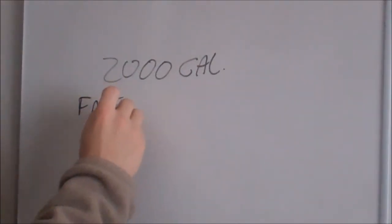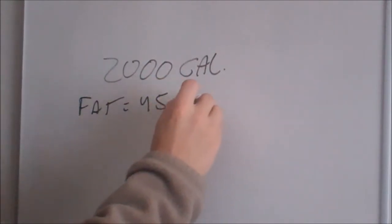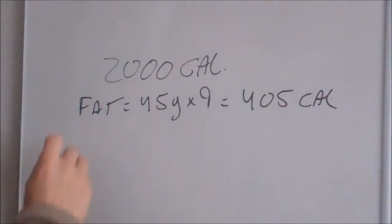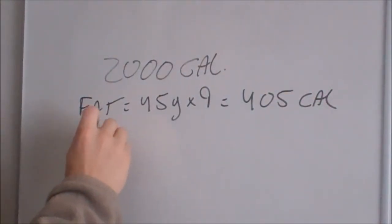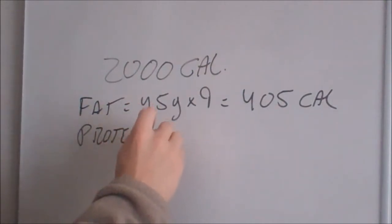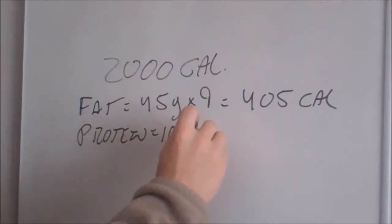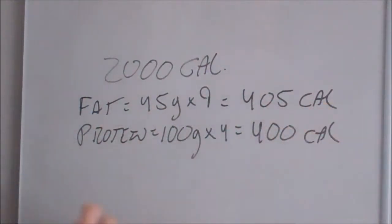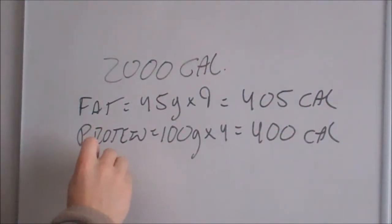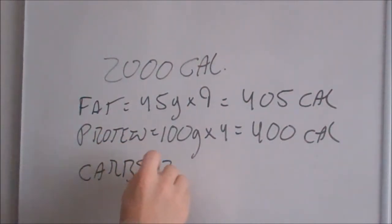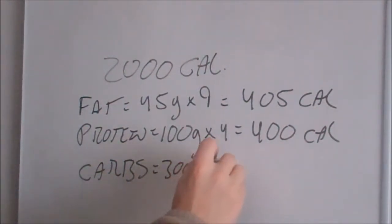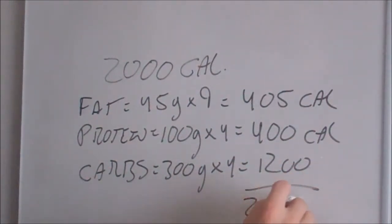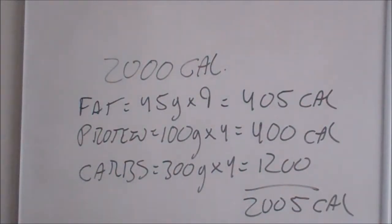So let's now look at your new budget: 2,000 calories. Your fat was way too high at 120 grams, so let's put that at 45 grams — 45 times nine is 405 calories. Let's up your protein just a little bit, especially if you're weight training and doing cardio, so let's say 100 grams — 100 times four is 400 calories. Now your recommended daily value of carbohydrates is actually 300, so for this example let's do 300 grams times four, which equals 1,200 calories. We add all those numbers up and we get 2,005 calories.